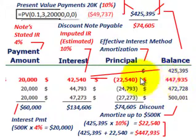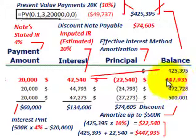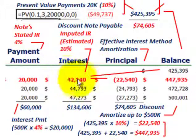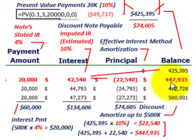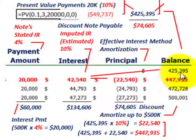The new balance is the beginning balance of $425,395 plus the amortized amount of $22,540, giving a new balance of $447,935. For each subsequent period, take the beginning balance times the imputed rate of 10% to get the new interest expense, compare that to the $20,000 cash payment, get the amortized amount, and add it to the beginning balance. Using this effective interest method, we amortize this note from its present value of $425,395 up to its maturity value of $500,000.